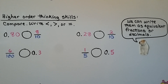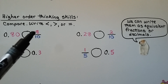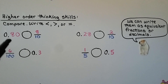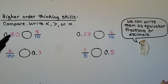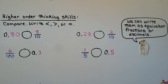Now let's use some higher-order thinking skills. We need to compare eighty hundredths and eight tenths. If you look carefully, eight tenths has an eight in the tenths place and no hundredths — this is actually eight tenths. Eighty hundredths is equal to eight tenths.